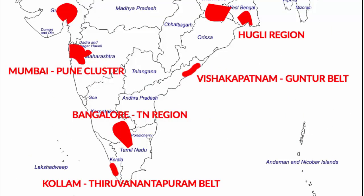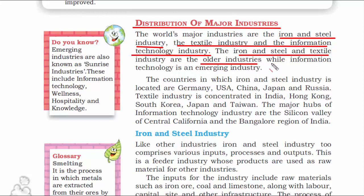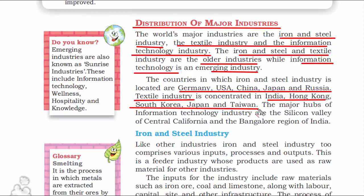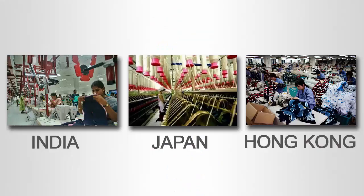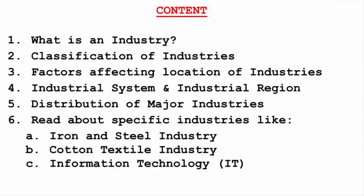The next topic is distribution of major industries. Three of the world's major industries are the iron and steel industry, the textile industry, and the information technology industry. Iron and steel is the oldest, since the industrial revolution took place in the 18th century. Information technology is an emerging industry. Countries where iron and steel industry is located include Germany, USA, China, Japan, and Russia. Textile industry is mainly concentrated in India, Hong Kong, South Korea, Japan, and Taiwan. The hub of information technology is Silicon Valley, and in India it's Bangalore.